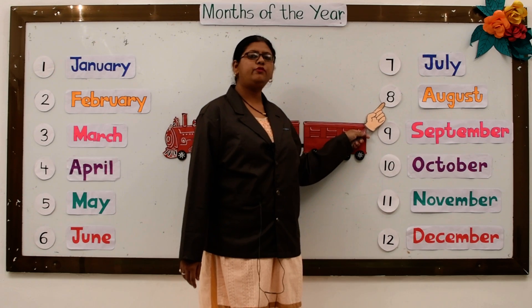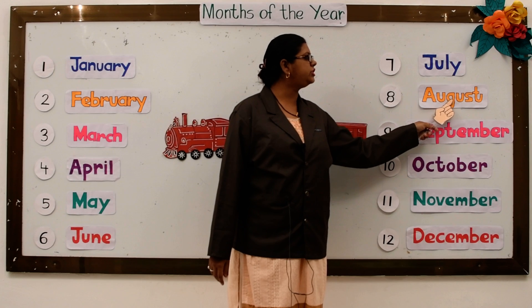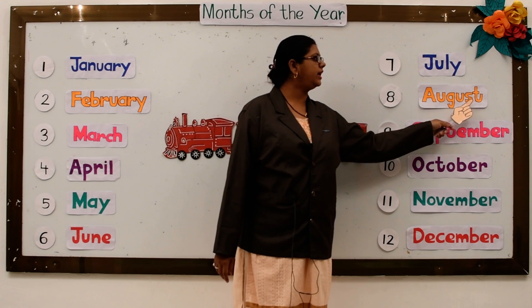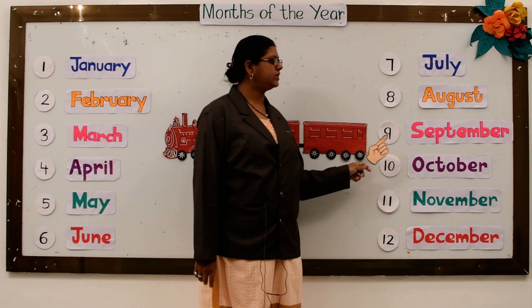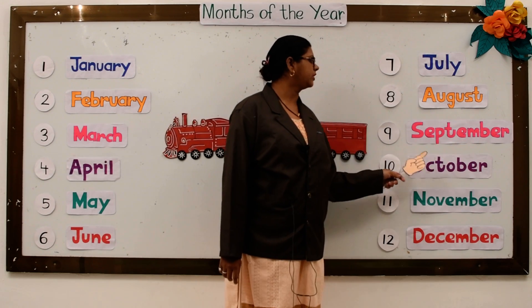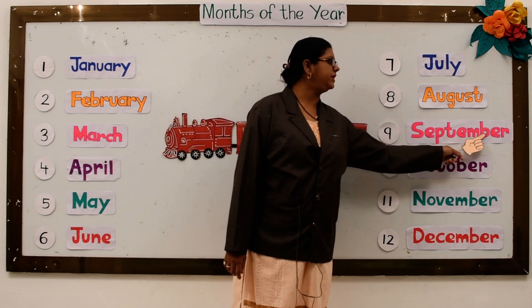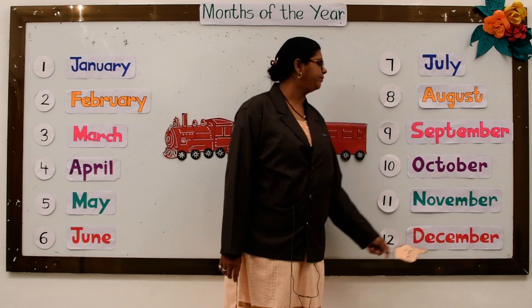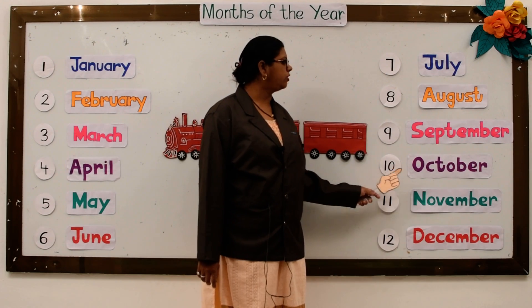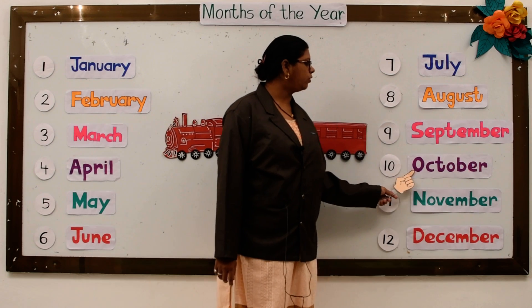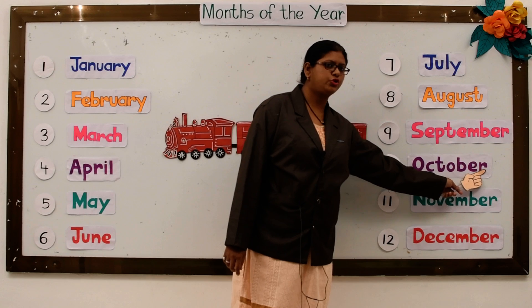The eighth month of the year is August. A-U-G-U-S-T, August. The ninth month of the year is September. S-E-P-T-E-M-B-E-R, September. The tenth month of the year is October. O-C-T-O-B-E-R, October.